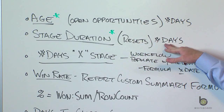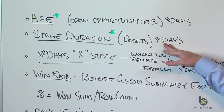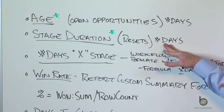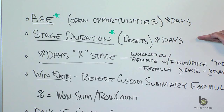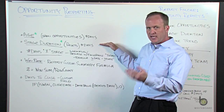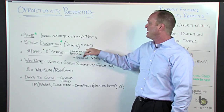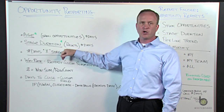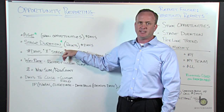Stage duration is another number-of-days field. It is the number of days an opportunity has been in the current stage. So if you go from stage one, and you've been in that stage for 47 days, and you move it to stage two, this number is going to reset back to zero.